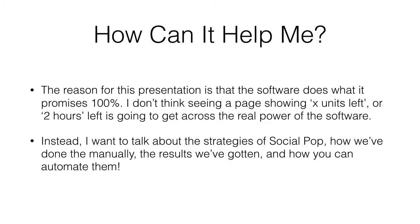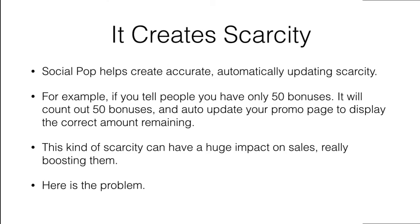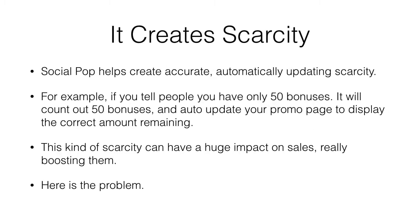My concern is that you're going to miss out on or ignore this because it doesn't seem shiny and powerful, when in actual fact it is — because the strategies behind Social Pop are really rock solid, and it's automating them and making them evergreen. So Social Pop creates scarcity — but more than that, it creates accurate, automatically updating scarcity. If you tell people you have only 50 bonuses, it will count out 50 bonuses and auto-update your promo page to display the correct amount remaining.